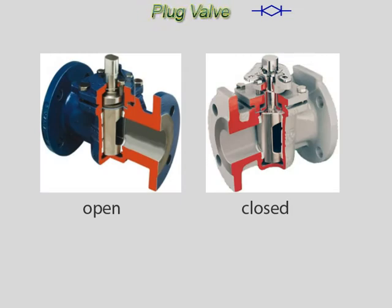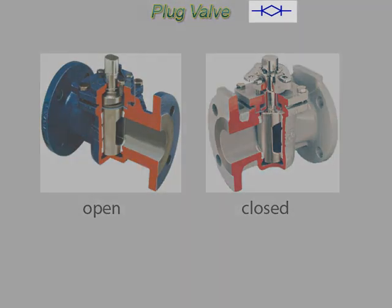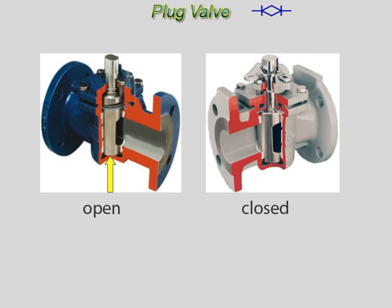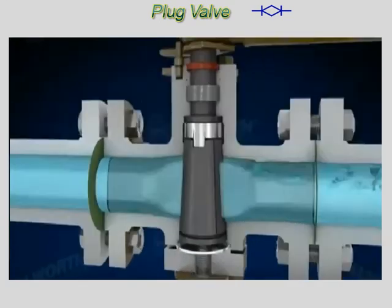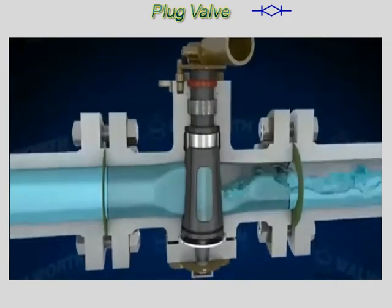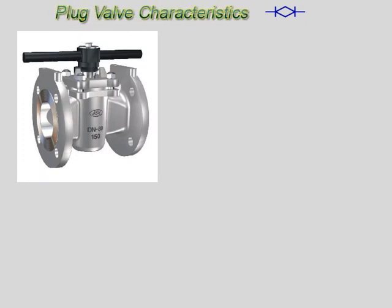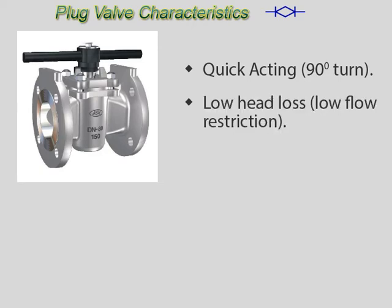A plug valve is another rotational motion valve used to stop or start fluid flow, similar in operation to a ball valve. The name plug is derived from the shape of the disc, which resembles a plug. In the open position, the passage in the plug lines up with the inlet and outlet ports of the valve body. When the plug is turned 90 degrees from the open position, the solid part of the plug blocks the ports and stops fluid flow. The main advantages are quick-acting quarter-turn on-off operation, very little flow restriction when open, and positive flow isolation with low torque. The main disadvantage is poor throttling characteristics. Plug valves are usually relatively small in size, approximately 6 inches in diameter or less.